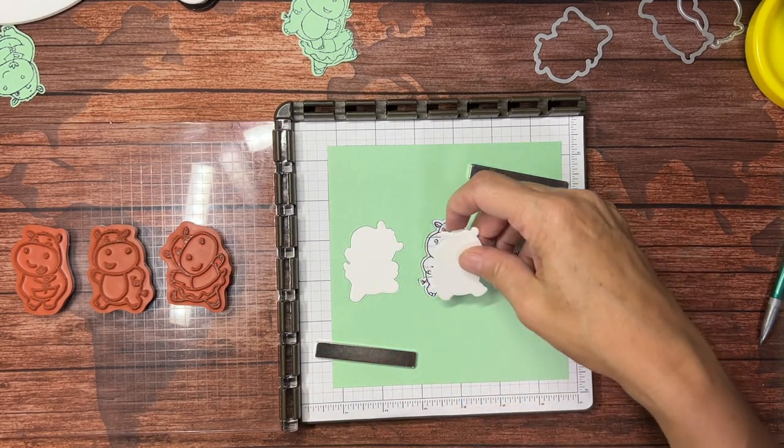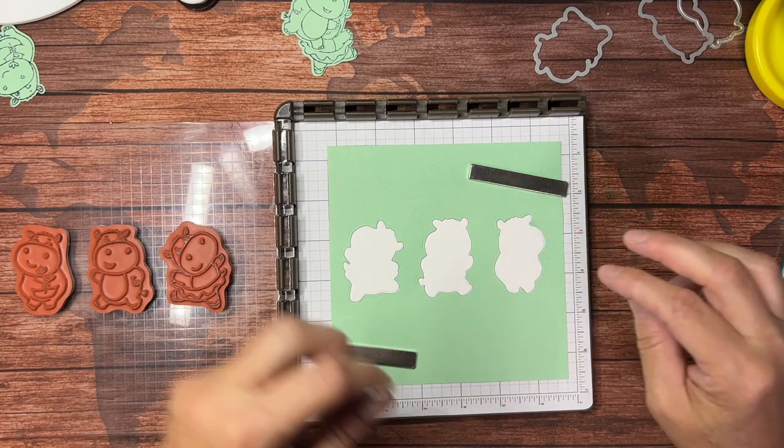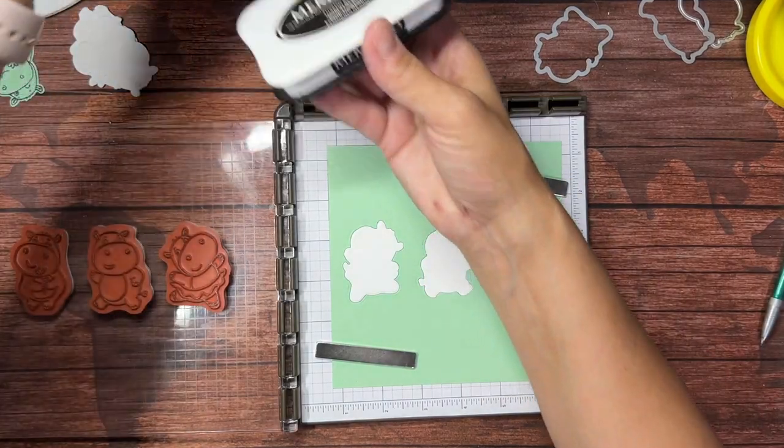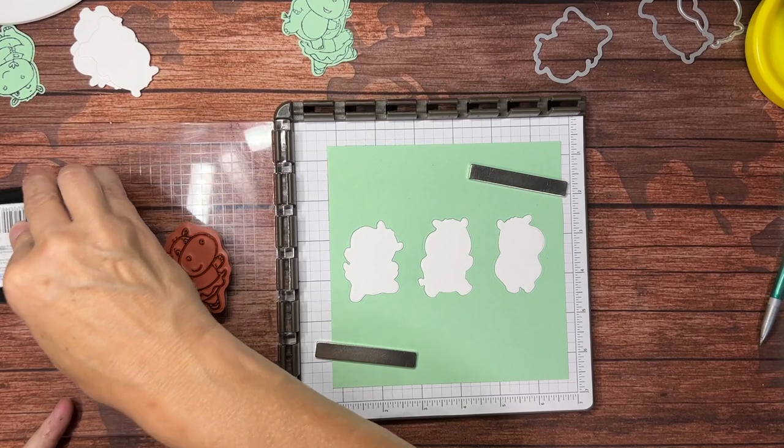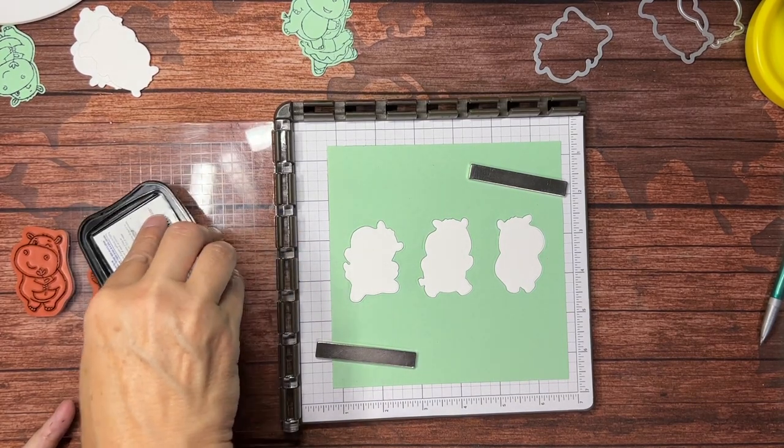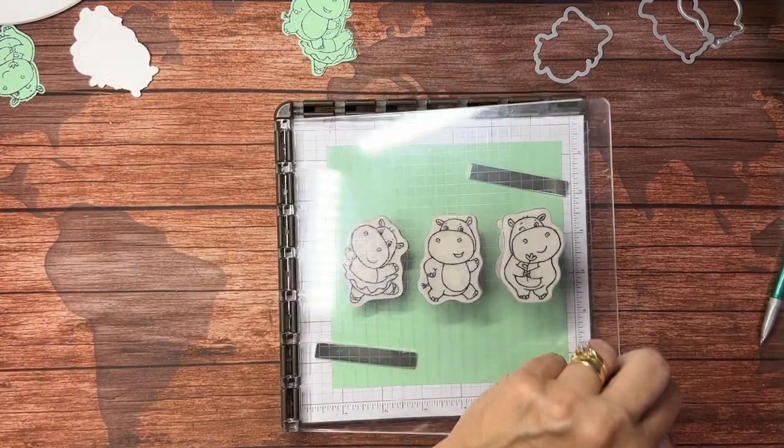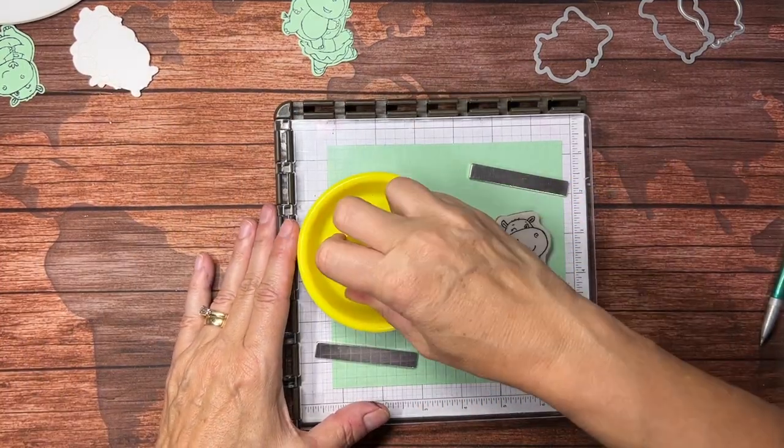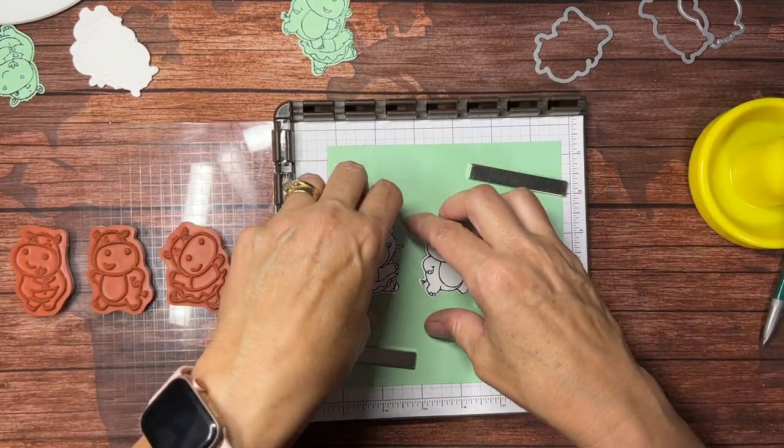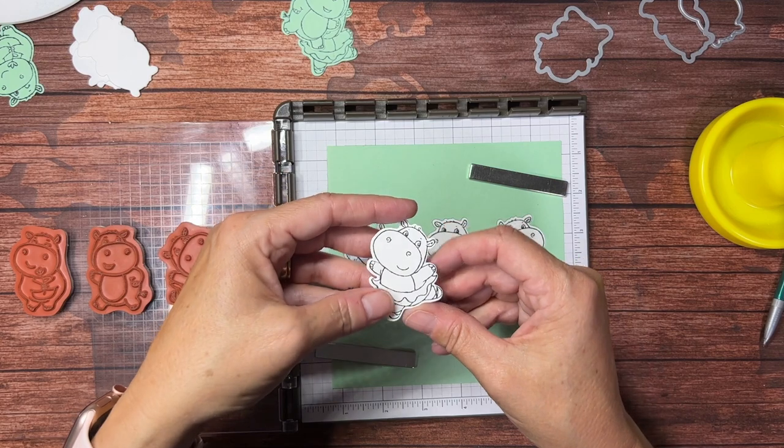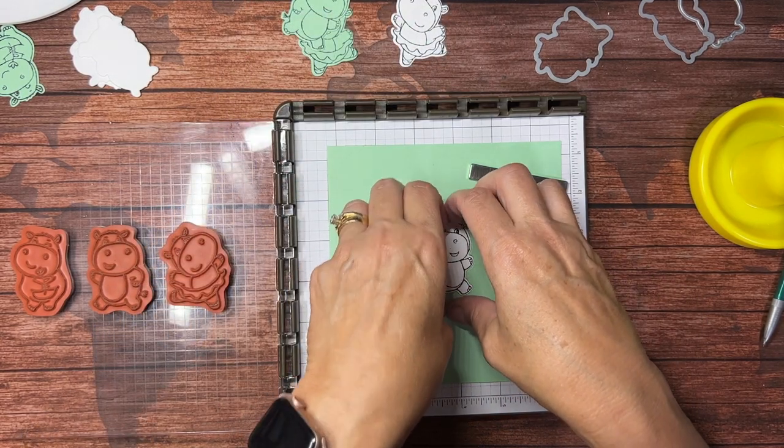I'm going to take my blanks, put them in the hole. I'm going to ink up my hippos, press down, and I have nice hippos all die cut.